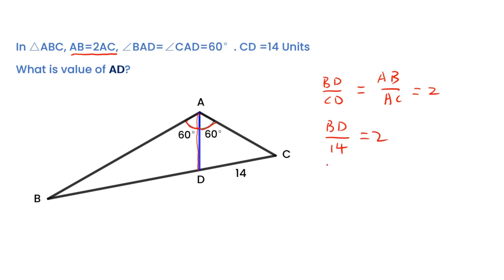The value of BD equals to 28. BD equals to 42. After calculating value of BC, then let's calculate the value of AB.